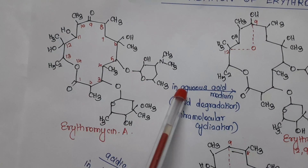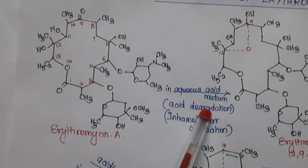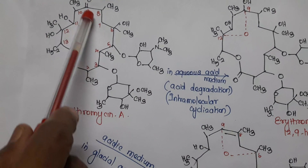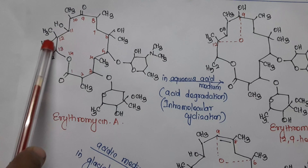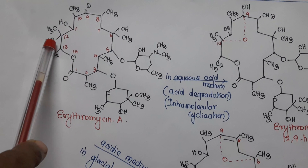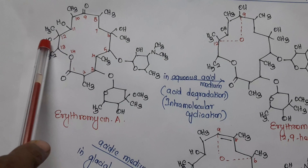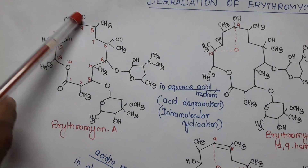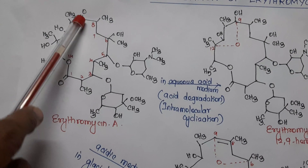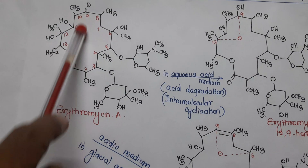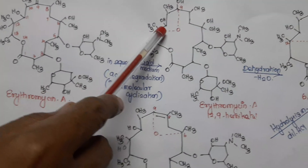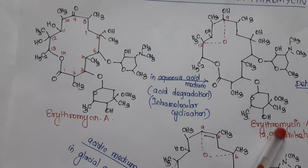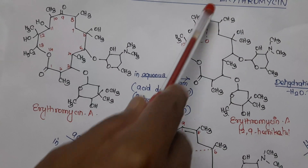In aqueous acidic medium, erythromycin undergoes acid degradation — that is, it forms intramolecular cyclization. On intramolecular cyclization, the hydrogen of the hydroxy group present at the twelfth portion goes and combines with the oxygen at the ninth portion. Because of that, the double bond is converted to a single bond, and to satisfy the valency of the ninth and twelfth carbons, there is formation of a hemi-ketal. These two carbons are connected by means of oxygen, forming a hemi-ketal. This is called erythromycin A 12-9 hemi-ketal.